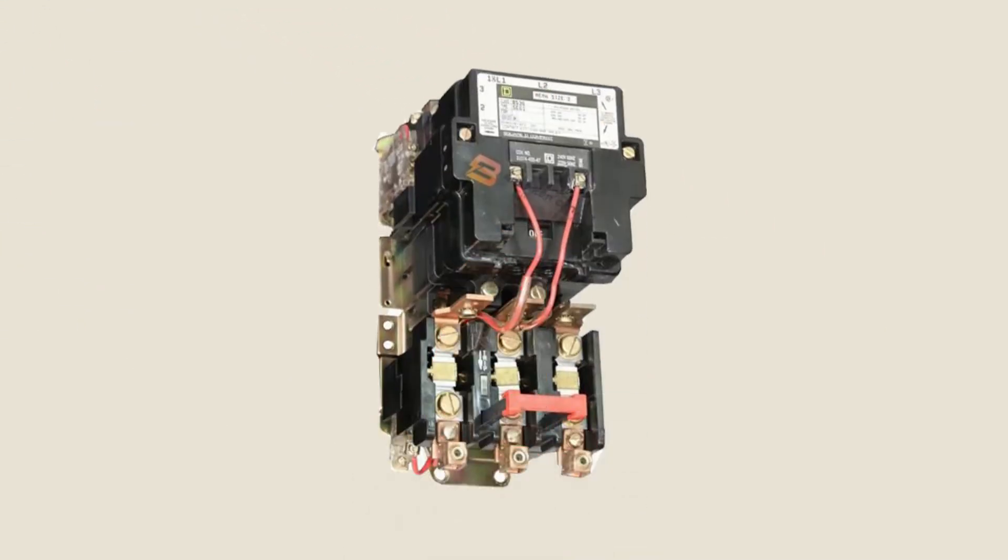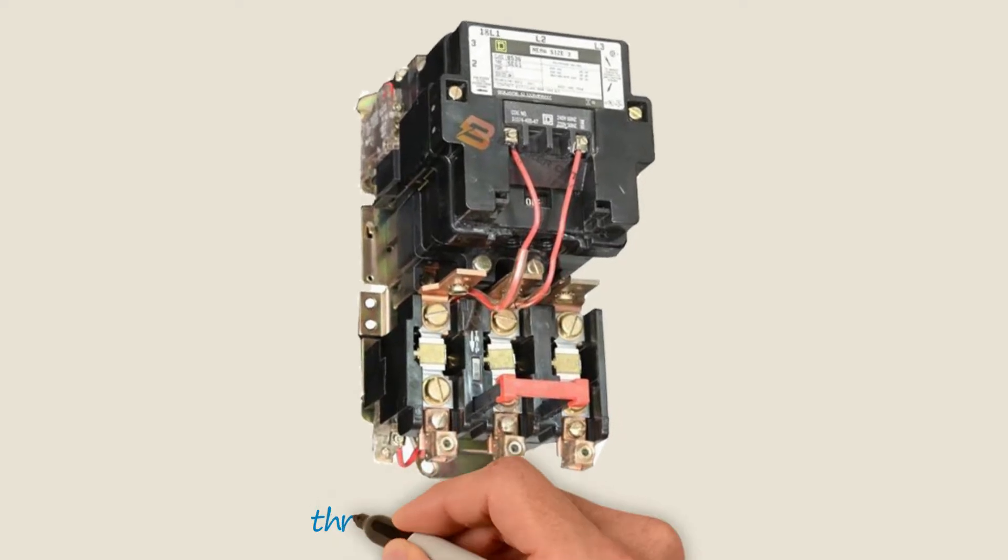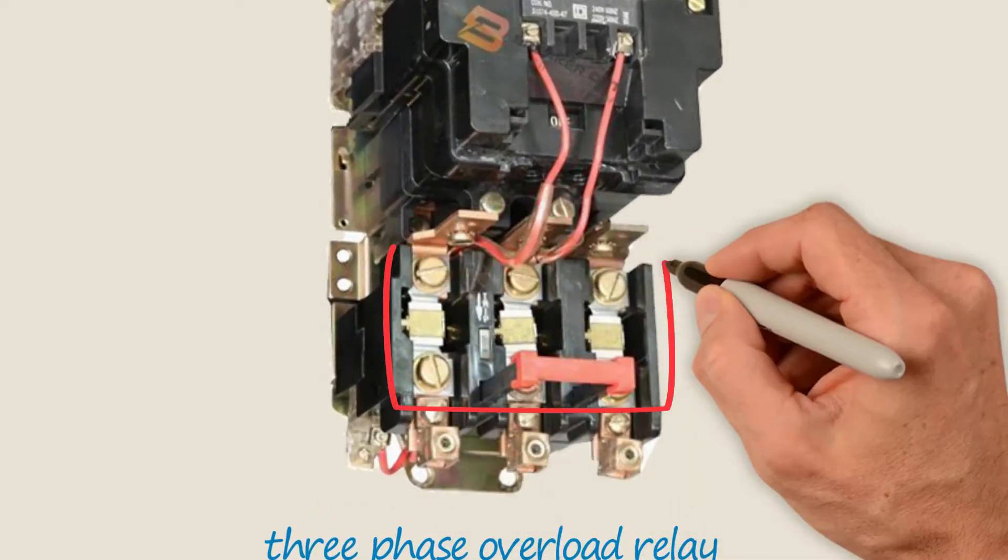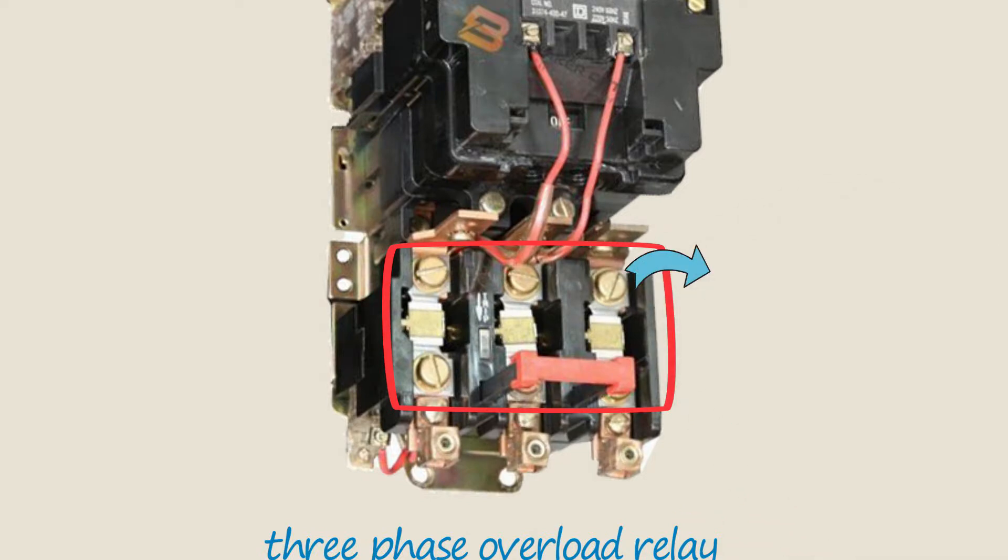Here is an example of this mechanism. This is a three-phase overload relay with three heater elements. When the heater element is removed we can see the geared wheel.